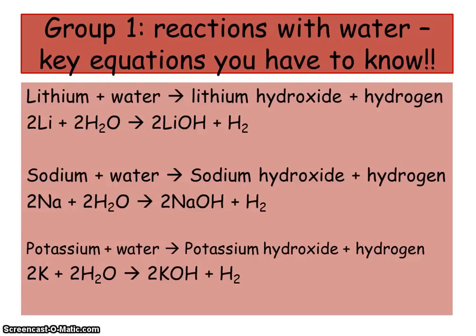Let's have a look at some word equations and symbol equations for Group 1 reactions. You've got the three metals we can do in school: Lithium, Sodium and Potassium — though you could easily substitute Rubidium, Caesium or Francium. They all react with water, just like in the glass trough. The first thing to notice is that they all make hydrogen — every single time you mix a Group 1 metal with water, you will make hydrogen gas.